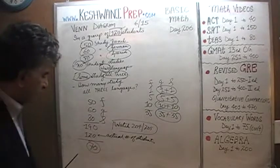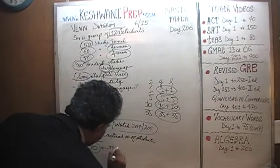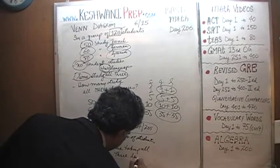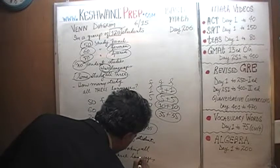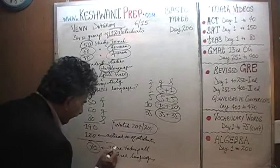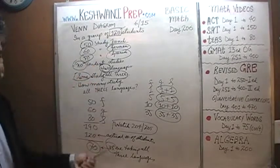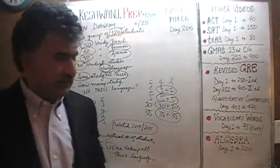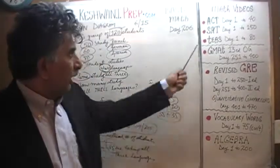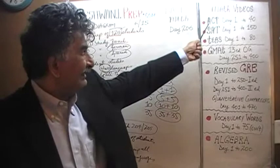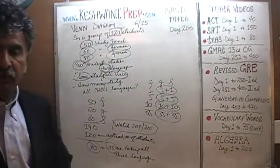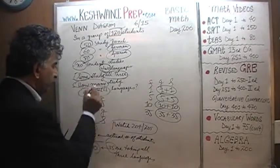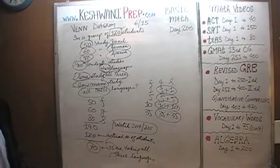That 70 tells us that we are counting 35 people three times, which is why we have a discrepancy of 70. That means 35 people are taking all three languages. That's it, we are done. As far as the problem is concerned, whether you are preparing for SAT, GRE, or GMAT, the answer is simply 35 people are taking all three.